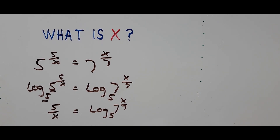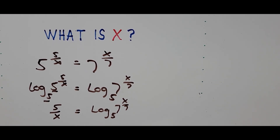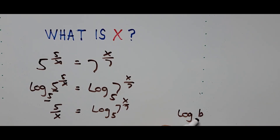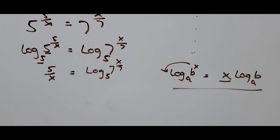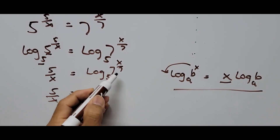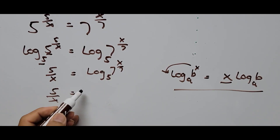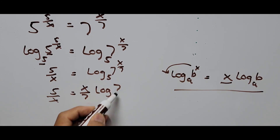Now we can recall the law of logarithm — specifically the exponent rule: logarithm base a of b raised to x equals x times logarithm base a of b. That means the exponent goes to the front and becomes the coefficient. So here, 5 divided by x equals x divided by 7 times the logarithm of 7 base 5.